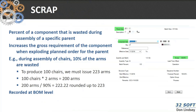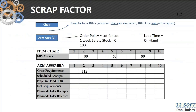There is also a scrap factor in QAD MRP on the bill of material parent-component relationship. This represents a component that is wasted during the assembly of the parent. If you calculate using the scrap factor, you can see that the planned order releases differ by those quantities from the yield factor calculation — down to values of 112, 112, and 112.